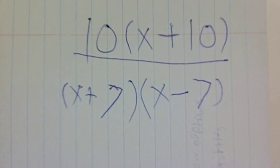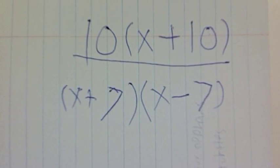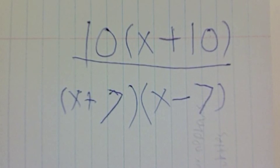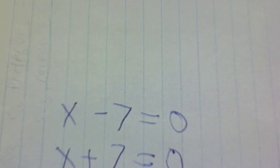Now you must take the x plus 7 and x minus 7 and set them both equal to 0. Once you have done that, you must solve as you would with a normal equation. Your final answer will be x cannot equal negative 7 and x cannot equal 7.